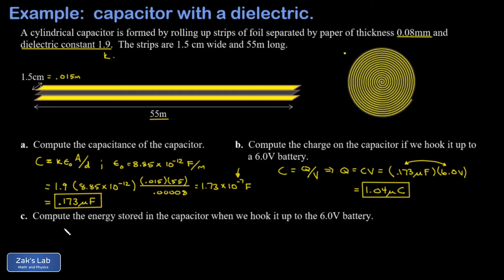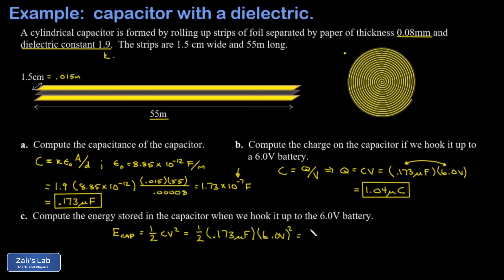Finally, we want to get the energy stored in the capacitor when it's hooked up to this battery. The formula for energy in a capacitor is one half C V squared. We have the capacitance and the voltage, so plugging in 0.173 microfarads and 6 volts squared gives 3.11, with a factor of 10 to the negative 6 from the micro prefix — so the answer is 3.11 microjoules.